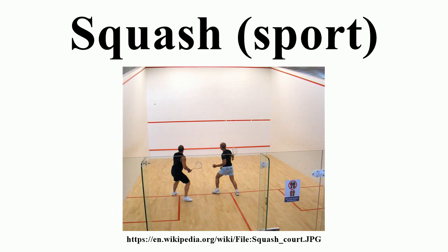The double yellow dot ball, introduced in 2000, is the competition standard, replacing the earlier yellow dot ball. There is also an orange dot ball. Players wear comfortable sports clothing; in competition, men usually wear shorts and a t-shirt, tank top or polo shirt, while women normally wear a skirt or skort, and a t-shirt, tank top or sports dress. The National Institute of Health recommends wearing goggles with polycarbonate lenses. Many squash venues mandate eye protection, and some association rules require that all juniors and doubles players must wear eye protection.